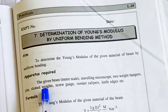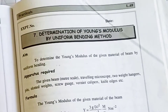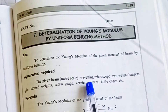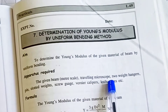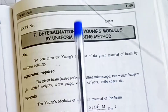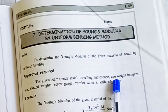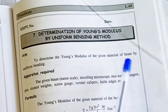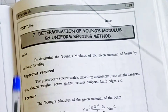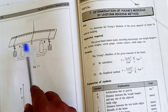The apparatus required: one beam, that is the meter scale we use in the lab. Next, a traveling microscope — I told you why it is called a traveling microscope in the last class. Next, two weight hangers. In non-uniform bending we use one weight hanger, but in this uniform bending we use two weight hangers.